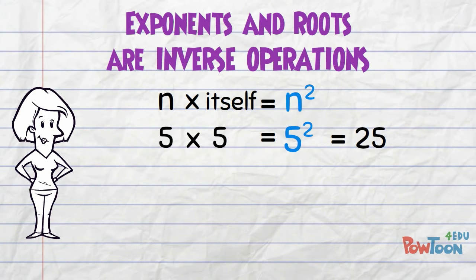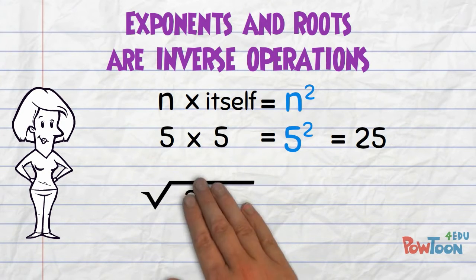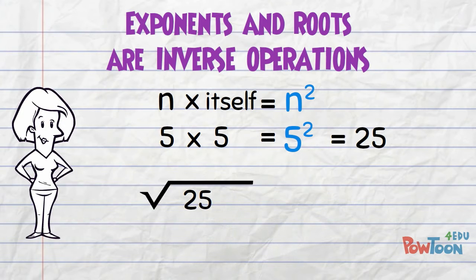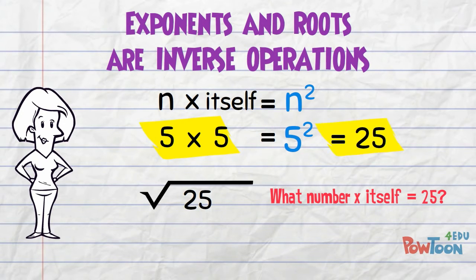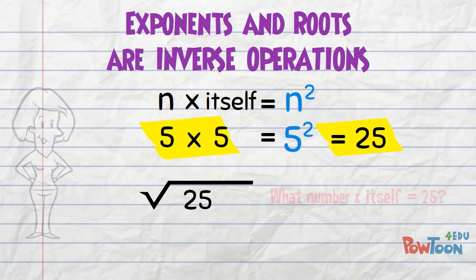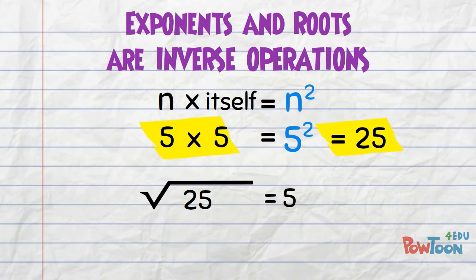And for the inverse, if you have to find the square root of 25, you ask yourself the question: what number times itself gives me 25? 5 times 5 is 25, so the square root of 25 is 5.